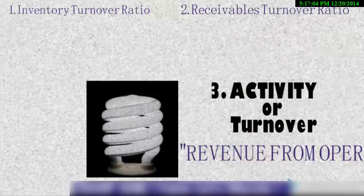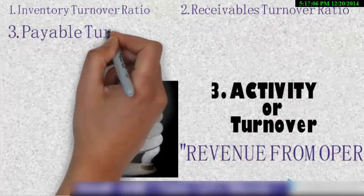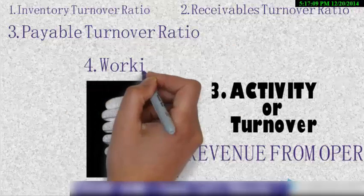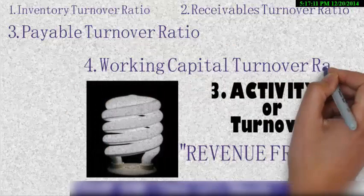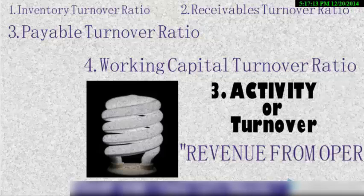Now what are the different types of activity or turnover ratio? It is inventory, receivable turnover, payable turnover that is the creditors turnover ratio and the fourth is working capital turnover ratio. So activity or turnover ratio tells us revenue operations.